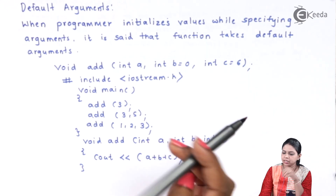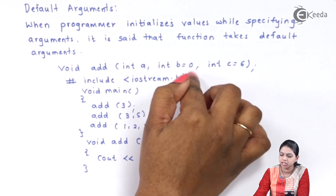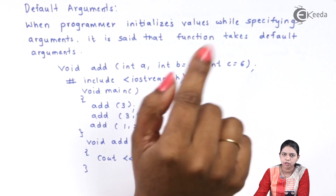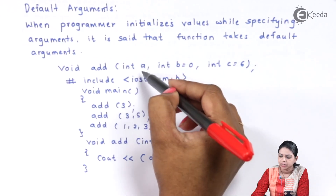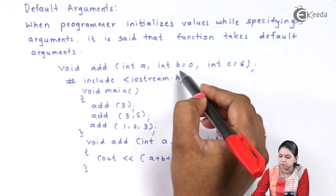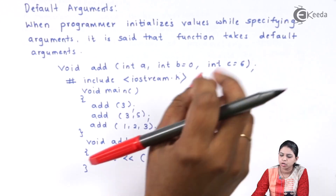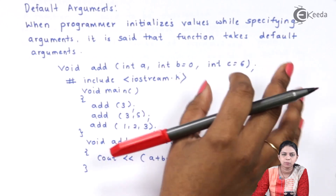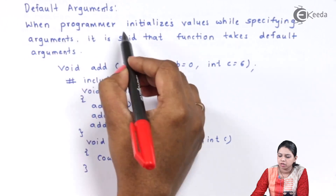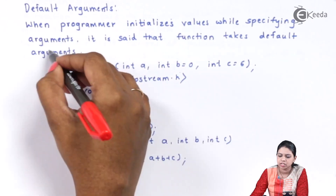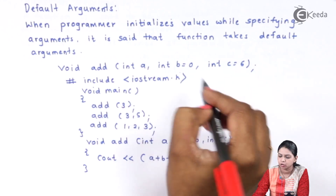For example, while declaring the function itself, I have initialized the values of the arguments. I have three arguments here: a, b, c. The value of a is not initialized, but b is 0 and c is 6. These initialized values are called default arguments. So the definition says: when a programmer initializes the values while specifying arguments, then the function is said to take default arguments.